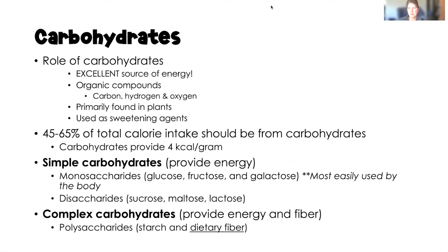We have simple carbohydrates and complex carbohydrates. Simple carbohydrates are monosaccharides or disaccharides — either way, they are very easily digested. Monosaccharides are the quickest digested and most easily used by the body; disaccharides are also very easily digested. When we eat a simple carbohydrate, it travels very quickly through our GI tract and within about 15 to 20 minutes becomes sugar in our bloodstream that can then be transferred to our cells and converted to energy.